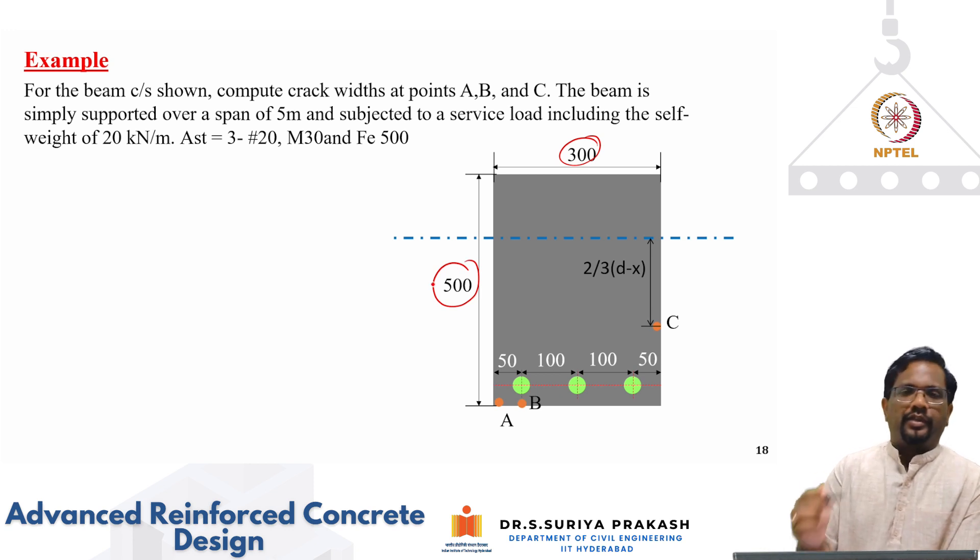It is having a width of 300 mm and a depth of 500 mm. And we are considering 3 points for crack width calculation. One is A, another one is B, which is just below the longitudinal bar. And there is one more location C, which is going to be at a distance of if I take, let us say this is your neutral axis depth and I am considering this point 2 third of D minus X.